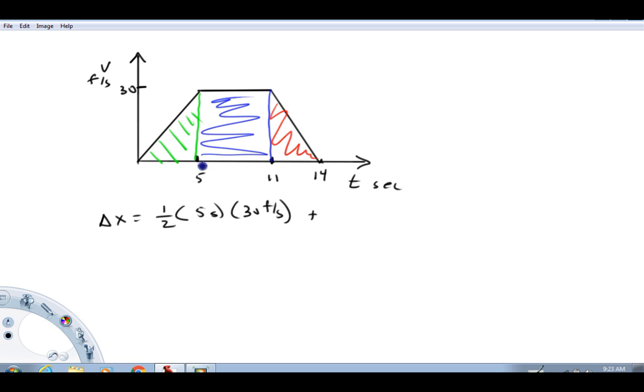The blue area is a rectangle. The base is six seconds and the height is 30 feet per second. Order doesn't matter whether it's 30 feet per second times six or six times 30. This product gives us the area in blue.